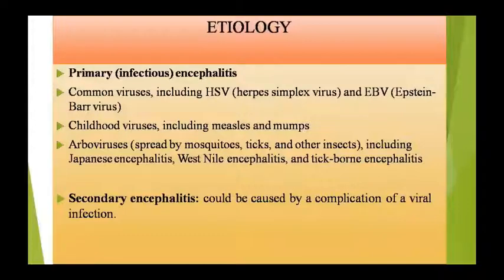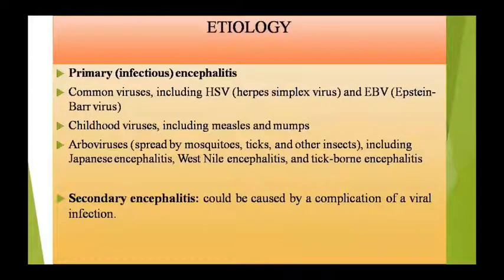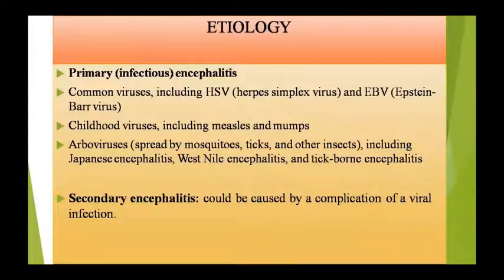Primary और secondary दोनों encephalitis के causes अलग-अलग हैं। Primary encephalitis mainly viruses की वजह से होता है — जैसे herpes simplex virus, Epstein-Barr virus। बचपन में measles या mumps का infection भी कारण हो सकता है। तीसरा, arbo virus जिम्मेदार होता है, जो mosquito, ticks, या दूसरे insects से फैलता है।